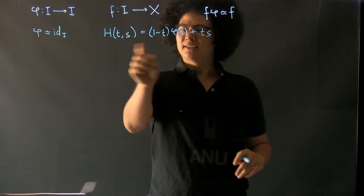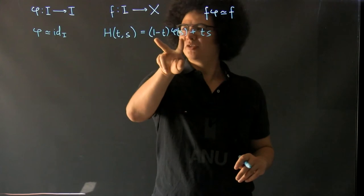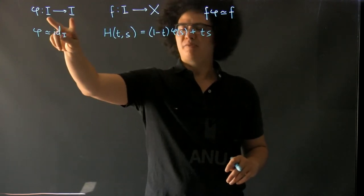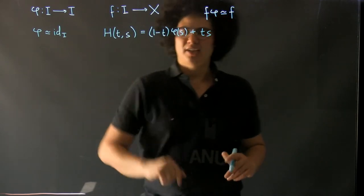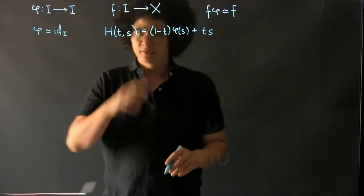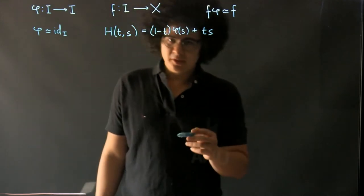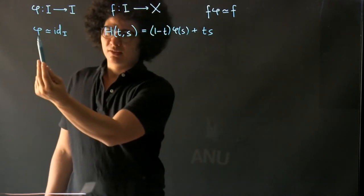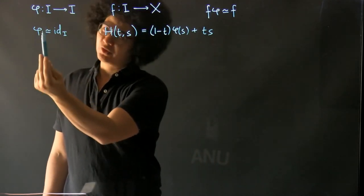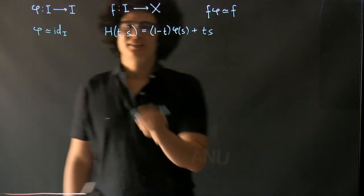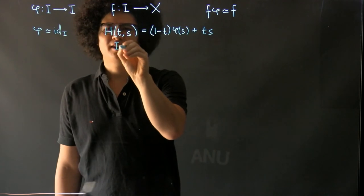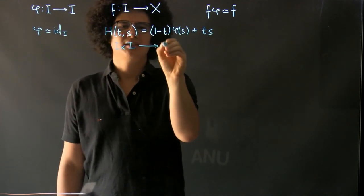So at the start when this is equal to 0 we have the map from the interval to itself φ, and then at time 1 we just have the identity. So we have this homotopy between this path in the interval to this path in the interval. So this is really from I cross I into I.